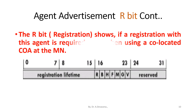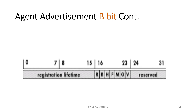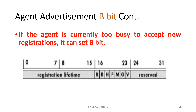The R-bit, that is the registration bit, shows if a registration with this agent is required even when using a co-located COA at the mobile node. If the agent is currently too busy to accept new registrations, it can set the B-bit, that is the busy bit.